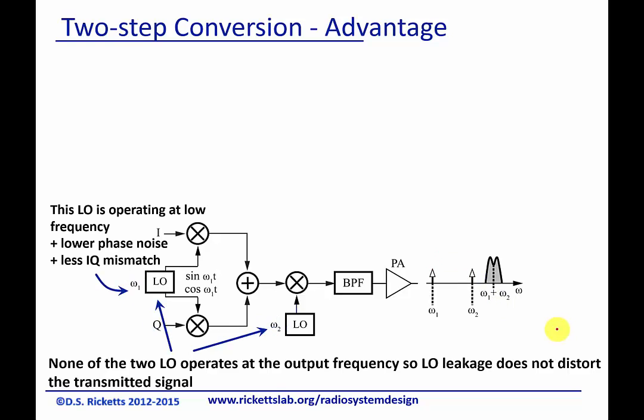Another nice thing is that omega-1 is operating at a much smaller or lower frequency than it would in a direct conversion. This allows us to have better phase noise and better matching for phase and amplitude. Just because it's at a lower frequency, it's easier and we have more control. The LO here still has phase noise problems like before, but there aren't any amplitude-phase mismatch issues because all of that is handled by the signal coming in.